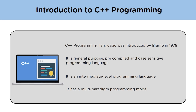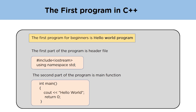Now that we've understood about C++ programming, let's move on to our first program in C++. The first program for beginners is the Hello World program, in which 'Hello World' is printed. In the first part of the program we are including a header file — hash include iostream. Header files are generally used to import features into the program. Functions like cin, used to take input, and cout, used to display output, are defined in this iostream header file.